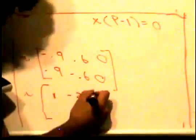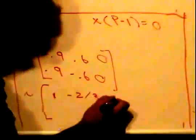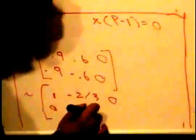The row-reduced form is [1, -2/3, 0; 0, 0, 0].